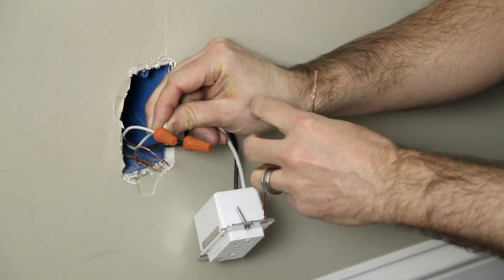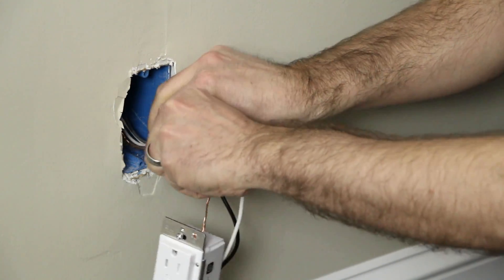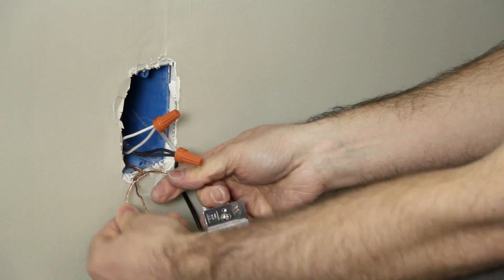Lastly, connect the bare copper ground wire on the iDevices Wall Outlet to the ground wire, which is usually copper or green in color.